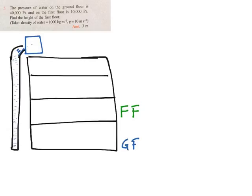So the pressures are different. On the ground floor the pressure is 40,000 Pascal. On the first floor the water pressure is 10,000 Pascal. So why is the pressure different at different places?